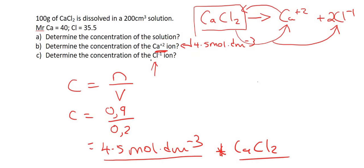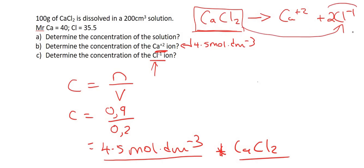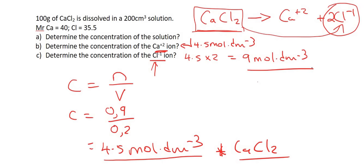For the chlorine ion: every CaCl₂ that breaks up produces two Cl⁻ ions, so there will be twice as many chloride ions. The concentration of Cl⁻ = 4.5 × 2 = 9 mol·dm⁻³. Alright guys, that's the end of this lesson. I hope that all makes sense.